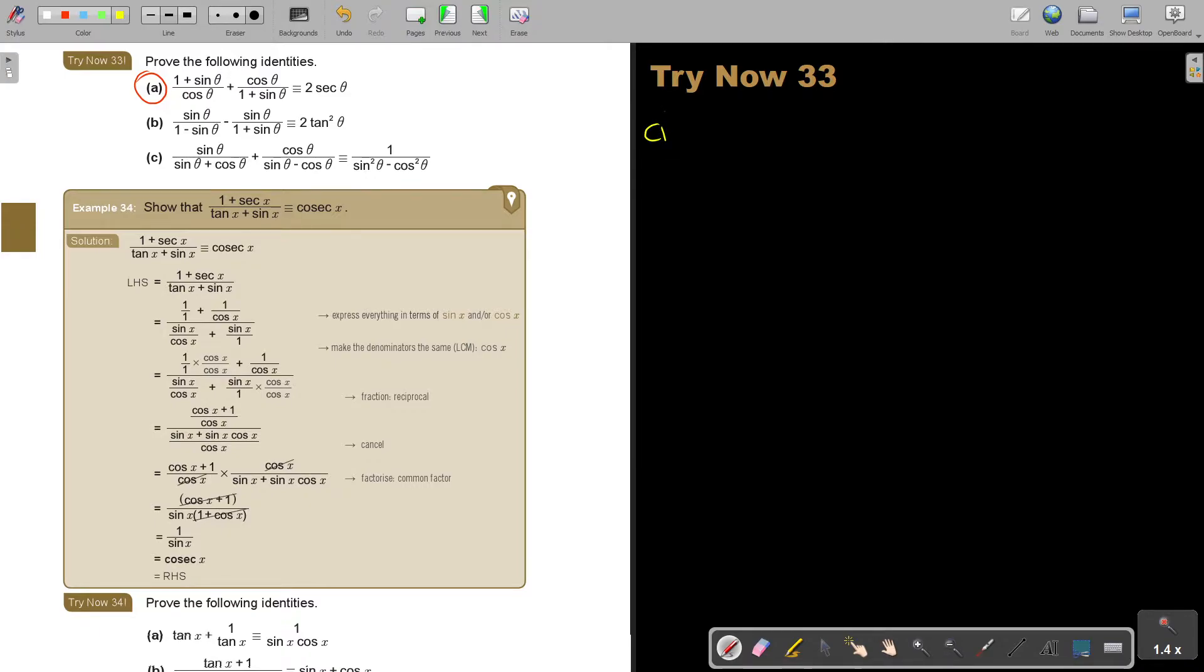I was going to write it down. So 1 plus sin theta over cos theta plus cos theta over 1 plus sin theta, identity 2 sec theta. So what am I going to do? I'm just going to start. I say this time I will do it correct, left hand side. So I'm going to first rewrite it. Not necessary, but just going to take it out.